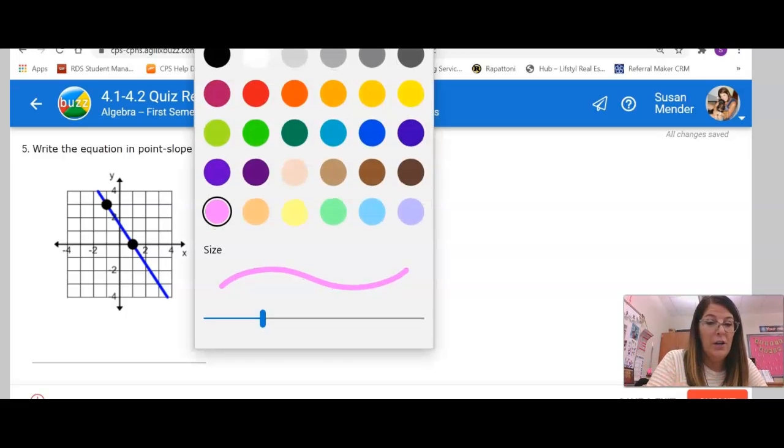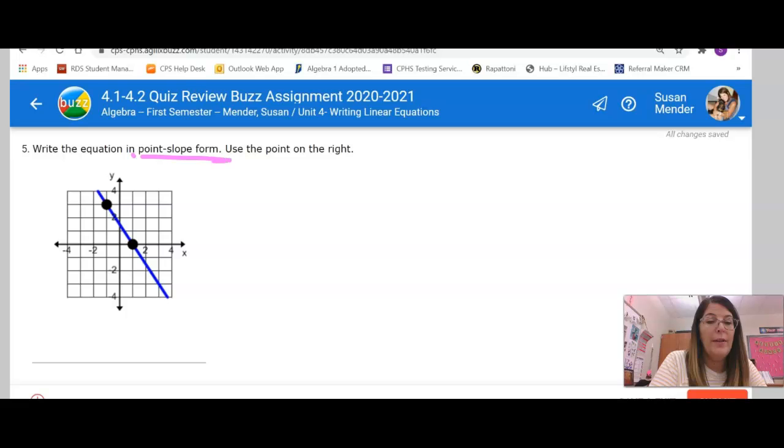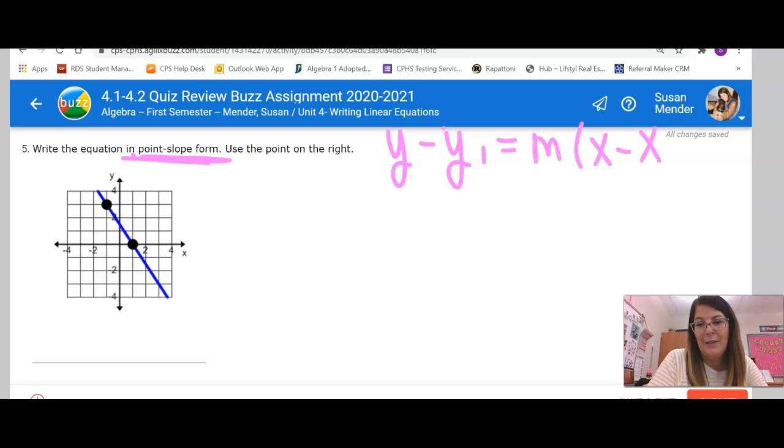So this one, we are writing the equation in point-slope form. I know it's going to look like y minus y₁ equals m times x minus x₁. It says use the point on the right, so I'm going to use this point right here.